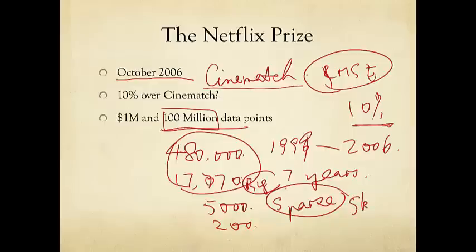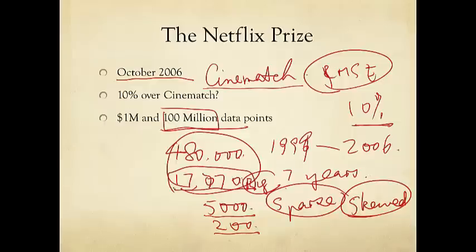Furthermore, it is skewed data. The average number of users per movie and movies per user are reasonable numbers. But some users actually rated a lot of movies — one user rated almost every single movie. And some users rated very few movies, just several of them. Whatever recommendation engine you use has to work for all movies and all users. So how do we deal with big, sparse, and skewed data? That's the challenge of the Netflix Prize: to get 10% improvement over Cinematch RMSE.